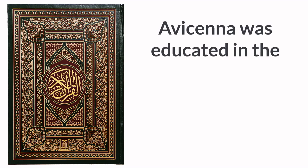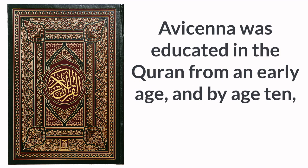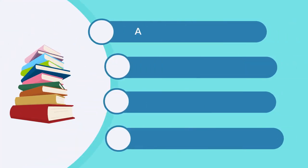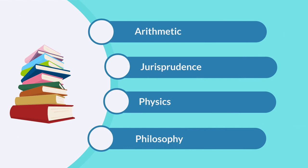Avicenna was educated in the Quran from an early age, and by age 10, he had memorized the entire Quran. His father later sent him to learn arithmetic, jurisprudence, physics, and philosophy.